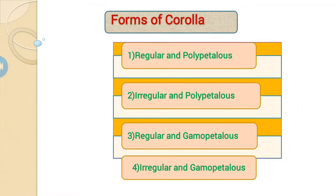The second point is the forms of a Corolla. Corolla is divided into four categories and four forms. First one is Regular and Polypetalous. Second one is Irregular and Polypetalous. Third one is Regular and Gamopetalous. And fourth one is Irregular and Gamopetalous.